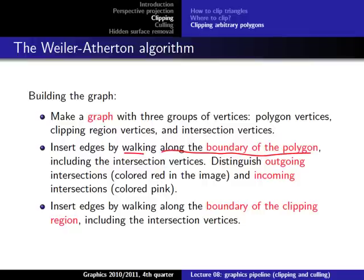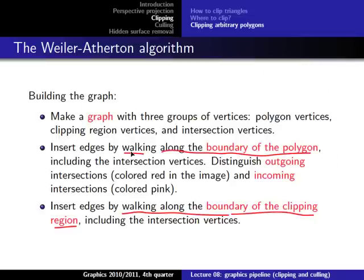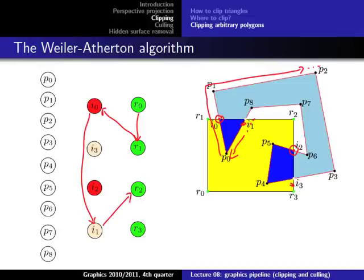The last edges to insert are for the clipping region. We walk along the boundary of the clipping region and add an edge every time we hit a clipping region vertex or an intersection vertex. Starting from R0, we go to R1, then to I0, then I1, then R2, then I2, then I3, then R3, and back to R0.